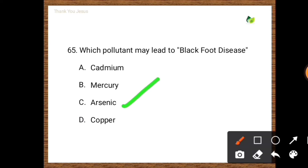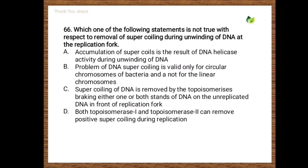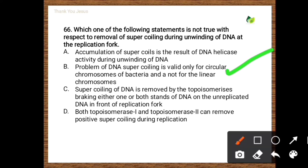Next question: Which one of the following statements is not true with respect to removal of supercoiling during unwinding of DNA at the replication fork? Options: (1) Accumulation of supercoils is the result of DNA helicase activity. (2) The problem of DNA supercoiling is valid only for circular chromosomes of bacteria and not for linear chromosomes. (3) Supercoiling of DNA is removed by topoisomerases by breaking either one or both strands. (4) Both topoisomerase 1 and topoisomerase 2 can remove positive supercoiling during replication. The correct option is the second one.